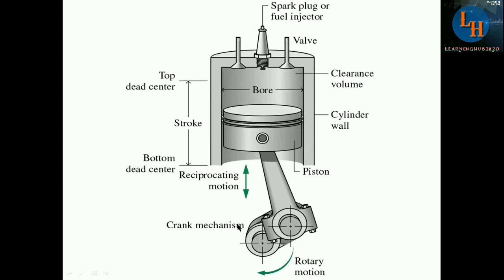There are two more components: the connecting rod, the crank, and the crankshaft. The connecting rod and crank convert the reciprocating motion of the piston into rotary motion. Because for a bike we require the rotary motion of the wheel, not reciprocating motion. From the combustion of fuel we get a linear motion that must be converted into rotating motion, so the connecting rod and crank are required.